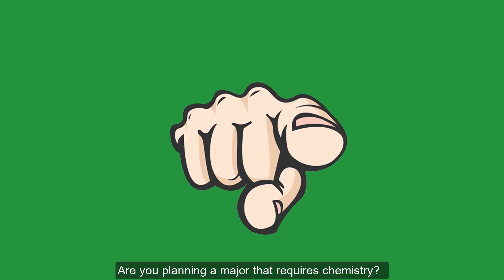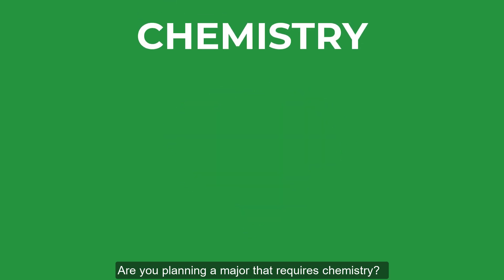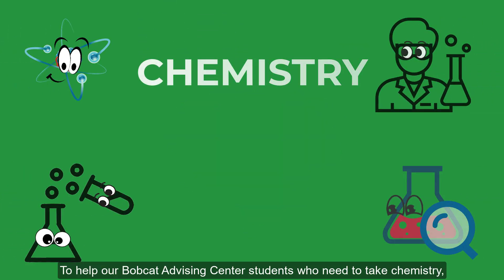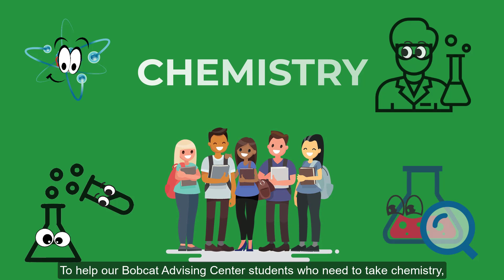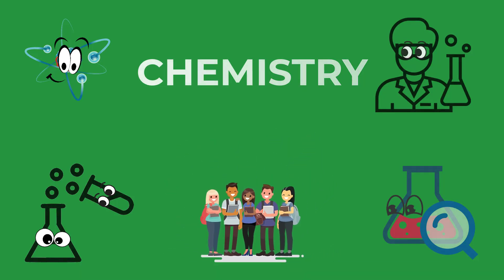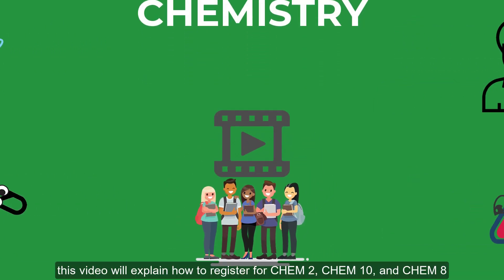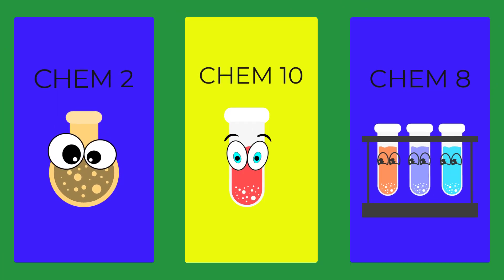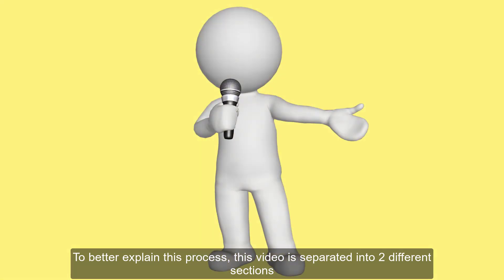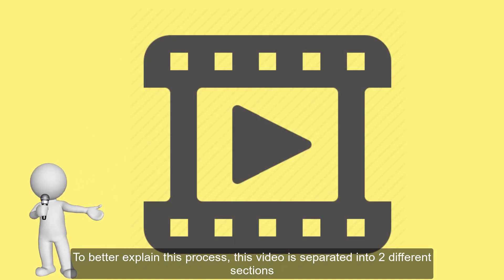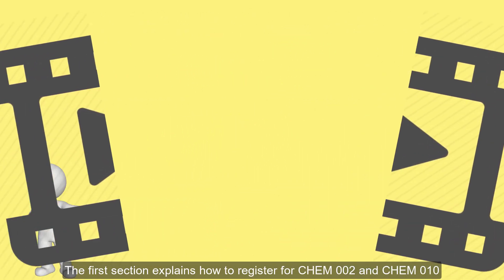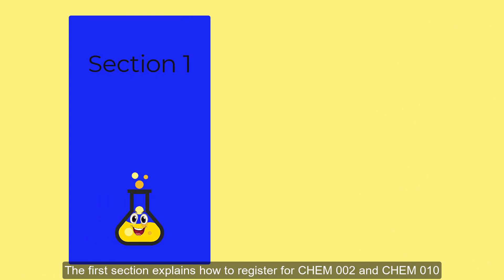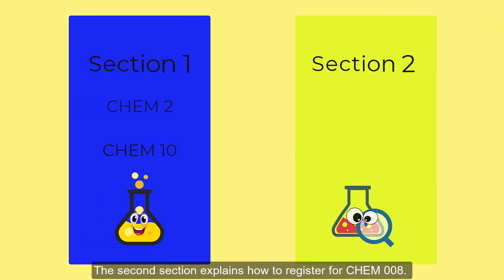Are you planning a major that requires chemistry? To help our Bobcat advising center students who need to take chemistry, this video will explain how to register for Chem 2, Chem 10, and Chem 8. This video is separated into two different sections: the first section explains how to register for Chem 2 and Chem 10, and the second section explains how to register for Chem 8.